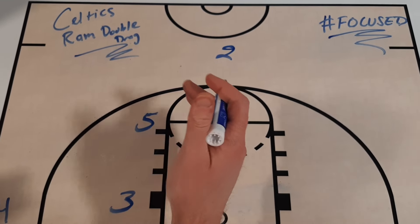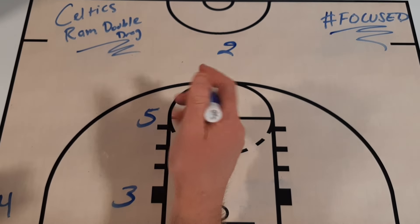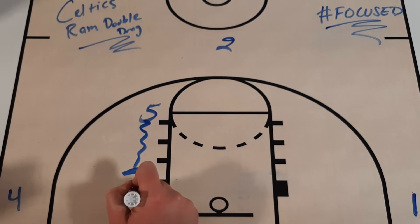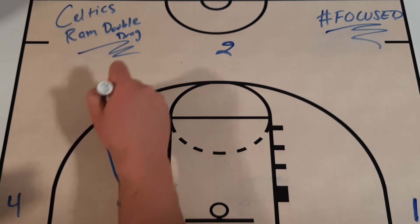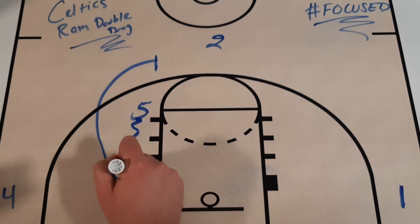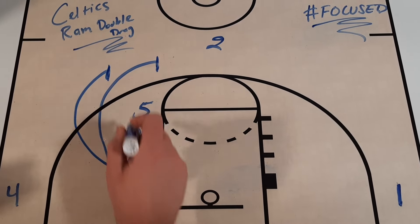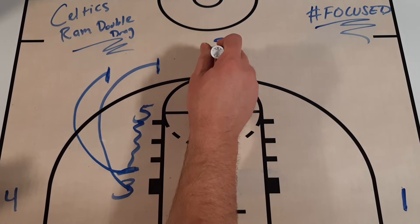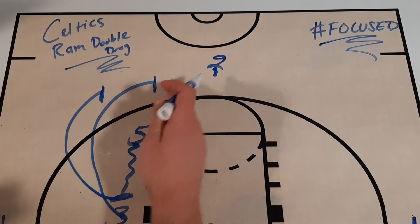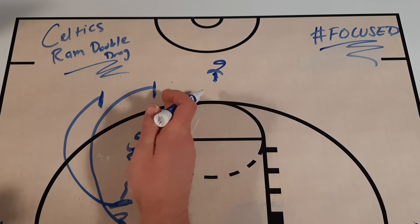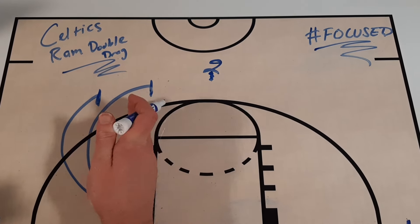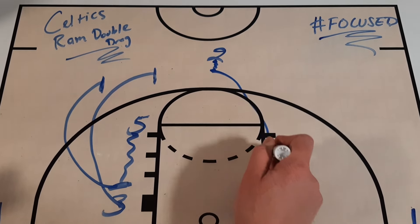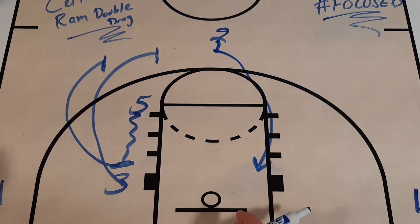The second time the Celtics run this action, they set the ram screen for Hauser, who comes up to set the first ball screen, followed by the second ball screen from Kata. But Brown reads that the defense is really starting to shade to this side, anticipating the action. He takes a dribble, works back to his left, and finishes at the rim.